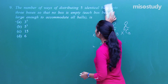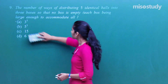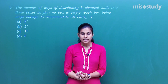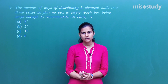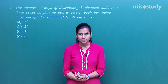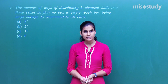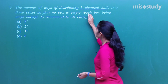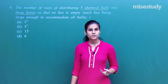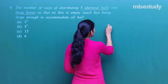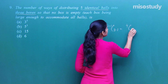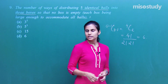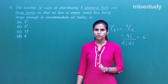Next: the number of ways of distributing 5 identical balls in 3 boxes so that no box is empty. Using the formula for distributing n identical objects into r groups with each group non-empty: ⁽ⁿ⁻¹⁾C₍ᵣ₋₁₎ = ⁴C₂ = 4!/(2!·2!) = 6. So there are 6 ways.